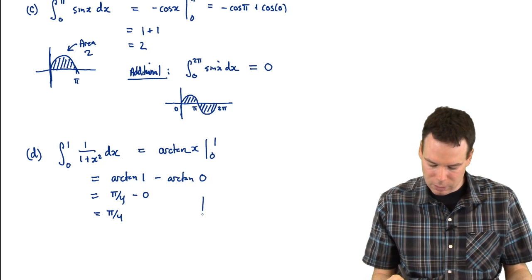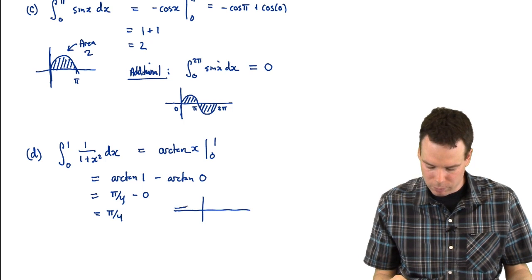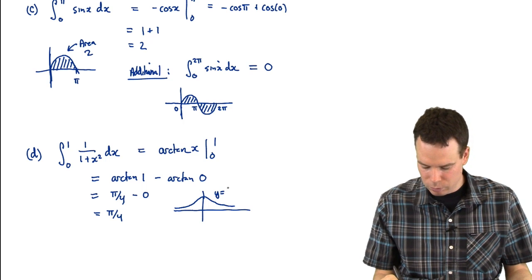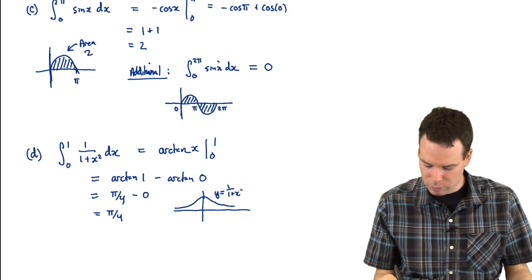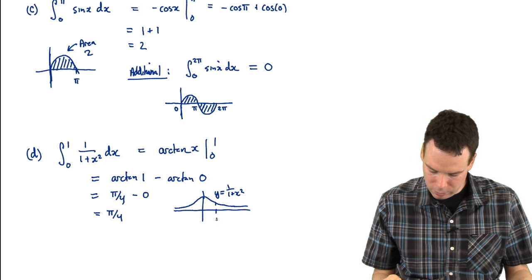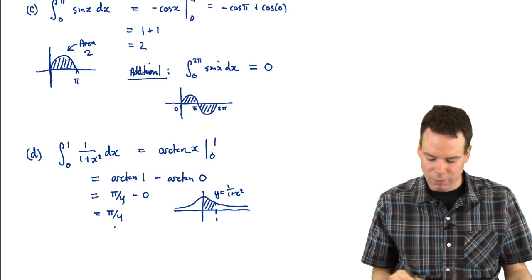And so what this means is if we look at this function 1 over 1 plus x squared, it looks something like this. So that's y equals 1 over 1 plus x squared. And we're going from 0 to 1. We've just found the area of that region there and it's pi by 4. So the area of this region is pi by 4.